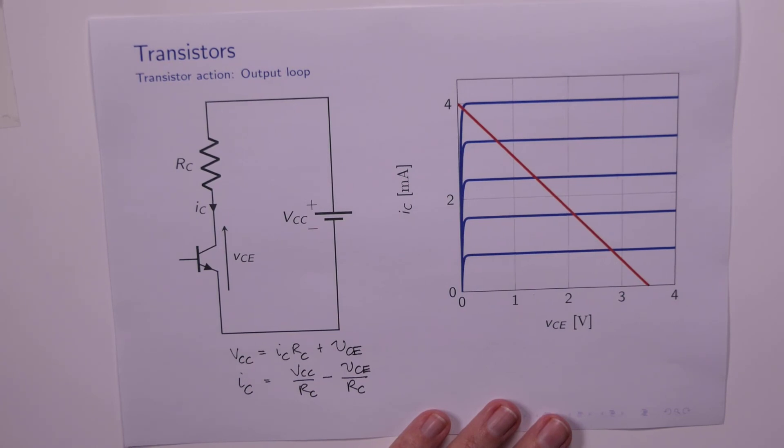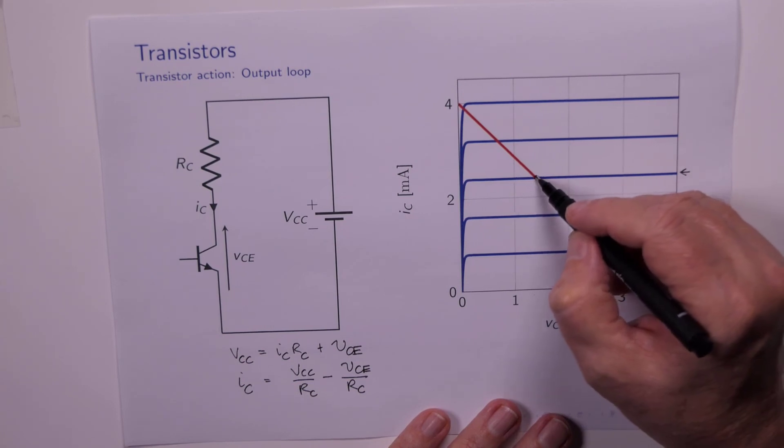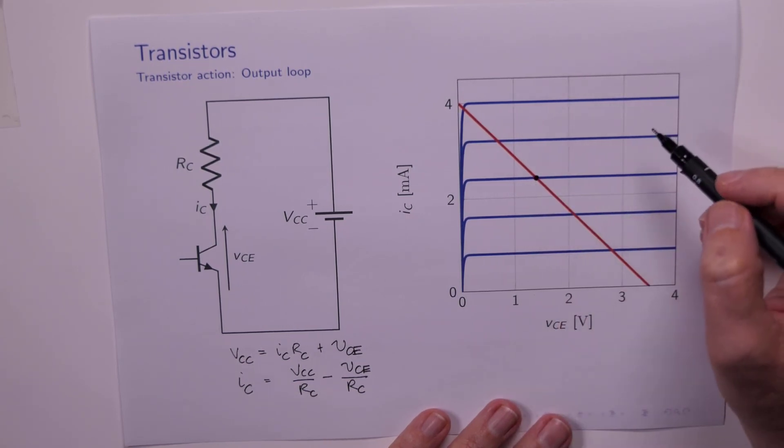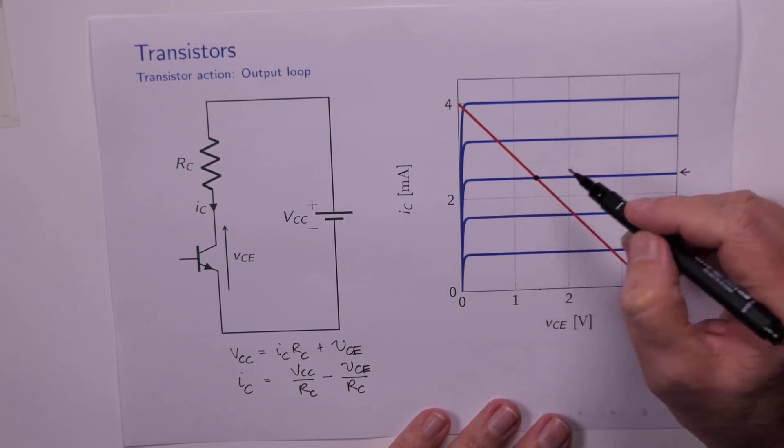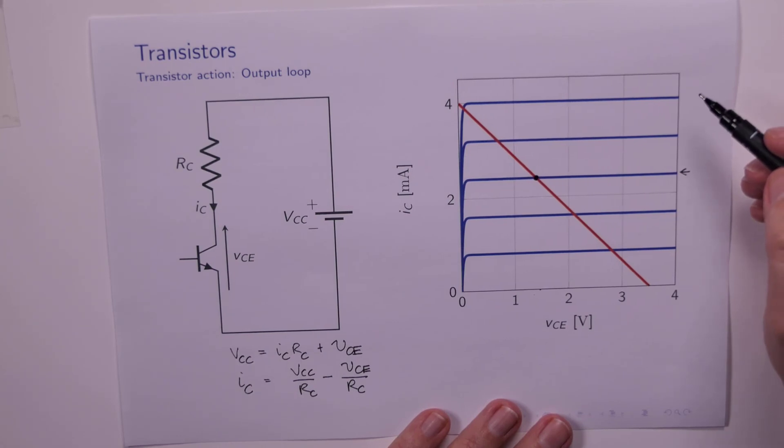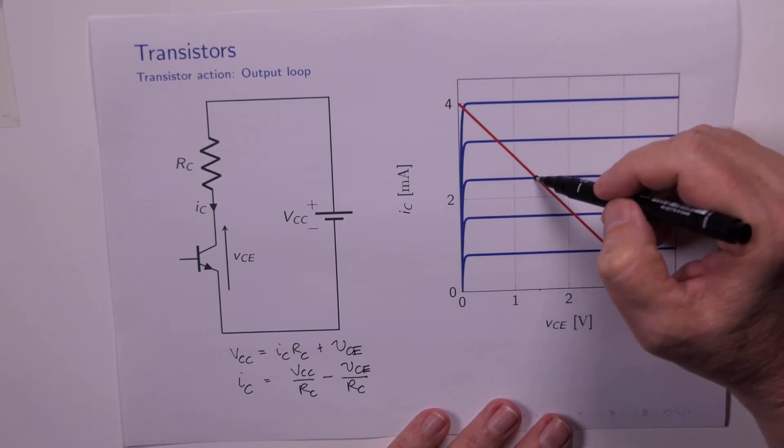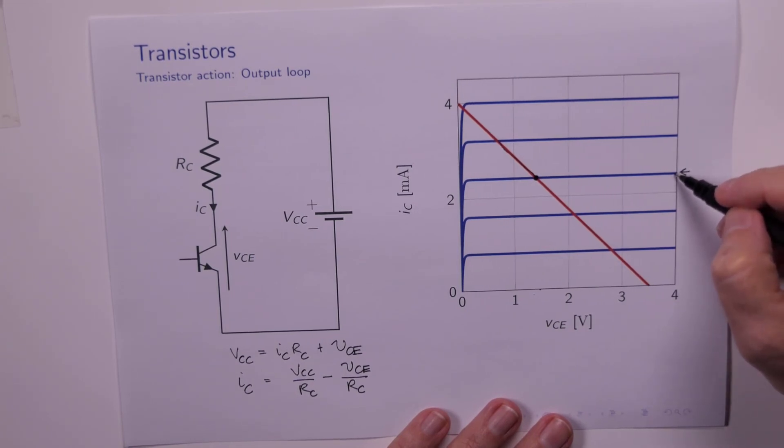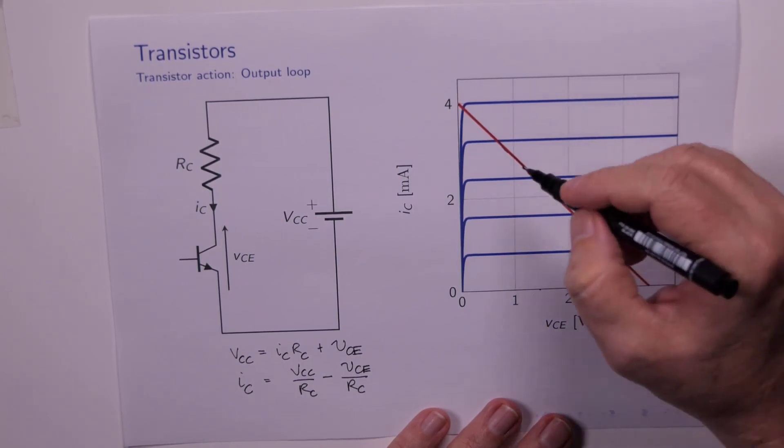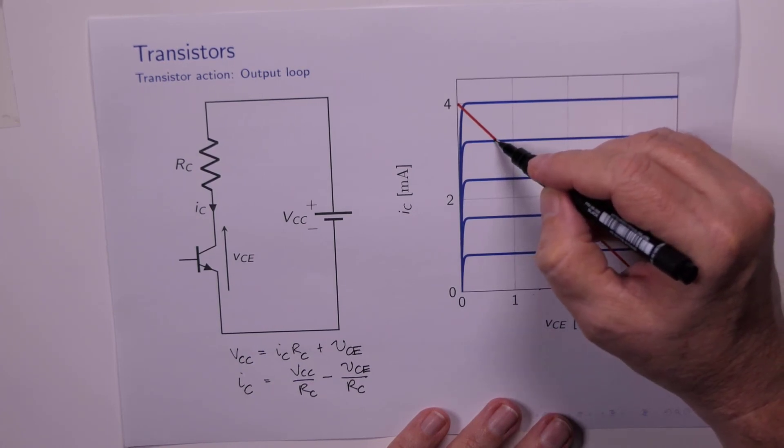When VIN was equal to 0, we had a particular value of IB. Let's say it's that one there. That means that the transistor operating point, namely the collector current and the collector emitter voltage, was sitting there. Now as VIN increased, that caused IB to increase, which means we are switching to a different line, which means our operating point is moving up. So maybe if the base current moved from that value to this value, our operating point would move up this curve until it reached there.